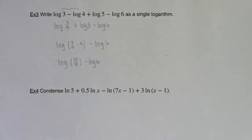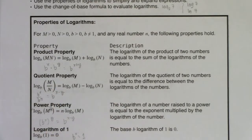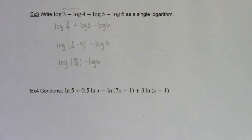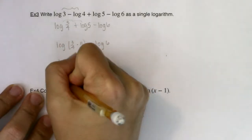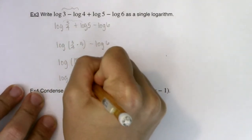Well, we're back to dealing with a quotient, right? I have two logarithms that are being subtracted. So I will use that as a quotient. So this becomes log of 15 fourths divided by 6.